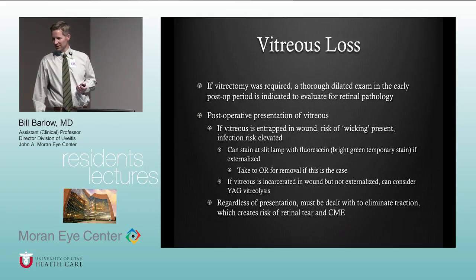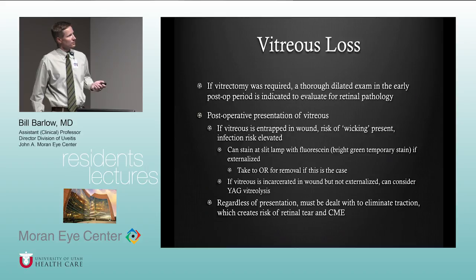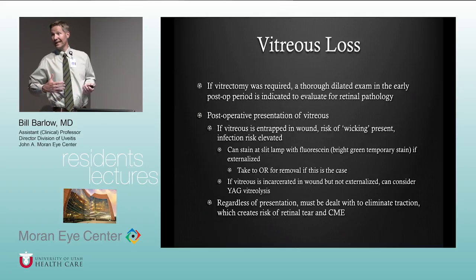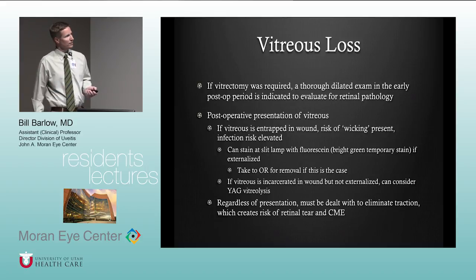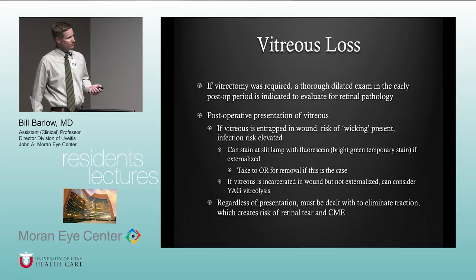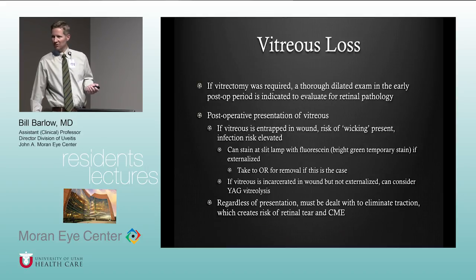If vitreous presents postoperatively — say on day one — and it's entrapped in the wound, there's a risk of wicking, which can allow bacteria a path into the eye and increase risk of infection. You can stain with fluorescein at the slit lamp — you'll see bright green stain if the vitreous has been externalized out of the wound. If externalized, take them back to the OR to remove it. If vitreous has only incarcerated the wound but not been externalized, you can use the YAG laser to lyse it and it will typically retract back into the posterior chamber.